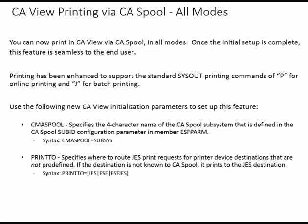Use the following new CA View initialization parameters to set up this feature. CMA Spool specifies the four-character name of the CA Spool subsystem that is defined in the CA Spool sub-ID configuration parameter in member ESF PARM. Syntax is: CMA Spool equals subsys.